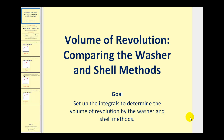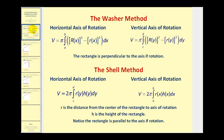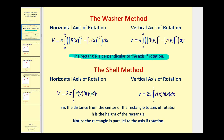Welcome to a lesson that will compare using the washer and shell methods to determine the volume of revolution. Let's start with a quick review. One of the most important things to remember when setting up these types of problems is to sketch a representative rectangle, which would represent a washer for the washer method and a shell for the shell method. The rectangle is perpendicular to the axis of rotation for the washer method, and parallel to the axis of rotation for the shell method.